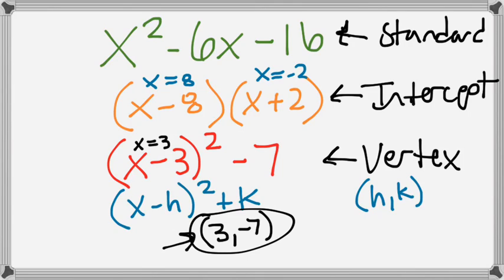If I'm given standard form, how would I figure out vertex form? I could find the axis of symmetry and then plug in that number to find the vertex. But it's really important to know vertex form because it's going to help us when we move on to horizontal and vertical shifts. So tonight I'm teaching you about vertex form, and in order to do that, I have to teach you about completing the square.